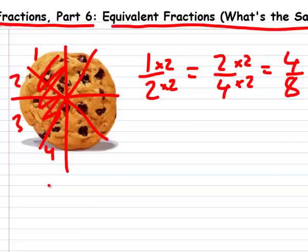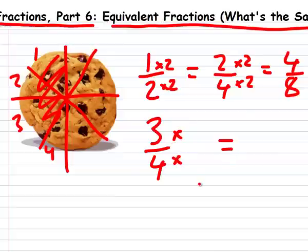In fact, you can take any fraction, say three fourths, multiply the top by any number you like, and multiply the bottom by the same number, and you'll always get an equivalent fraction.